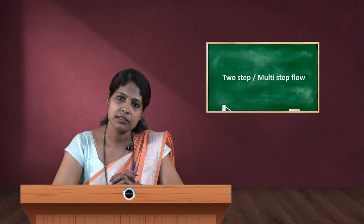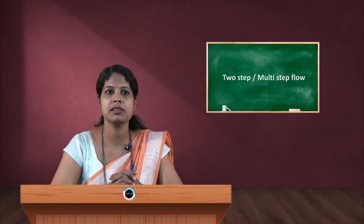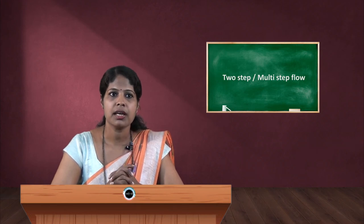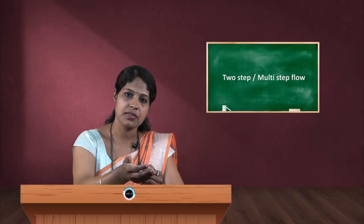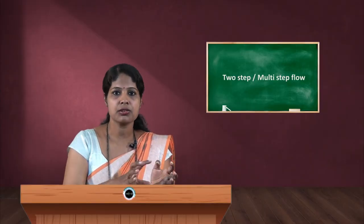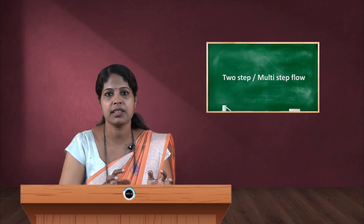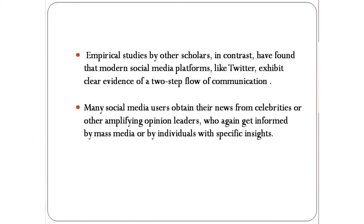But again, there is another school of thought with empirical studies by other scholars. They found that modern social media platforms like Twitter exhibit clear evidence of two-step flow of communication. Many social media users obtain their news and information from celebrities or opinion leaders who have received messages from mass media. These opinion followers receive messages from opinion leaders and then spread their messages to the public or their followers. This proves there is still existence of two-step flow model.